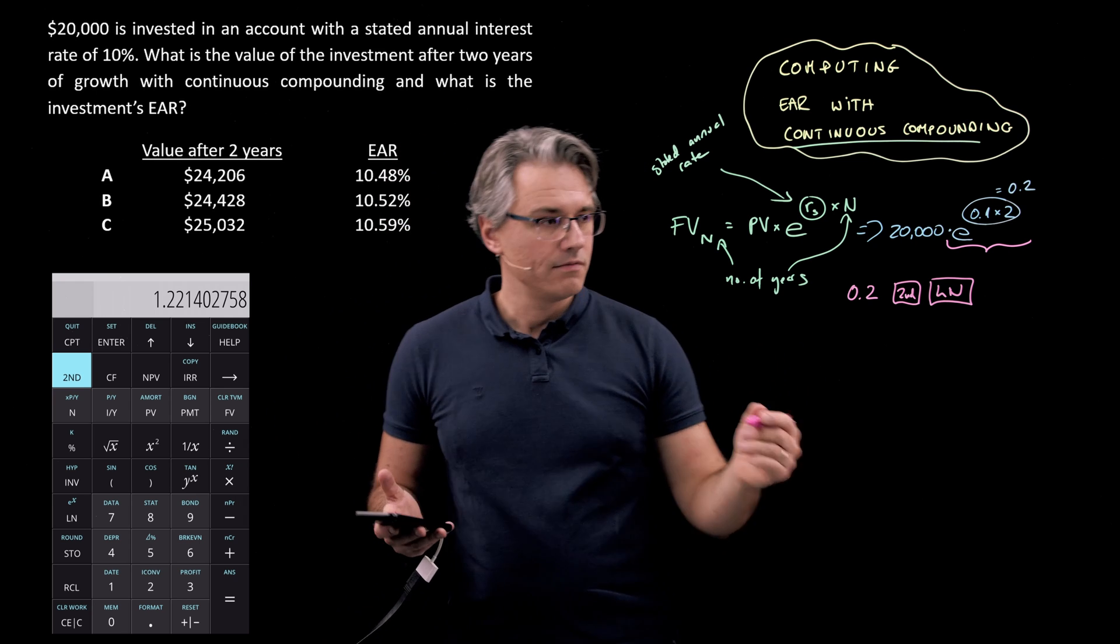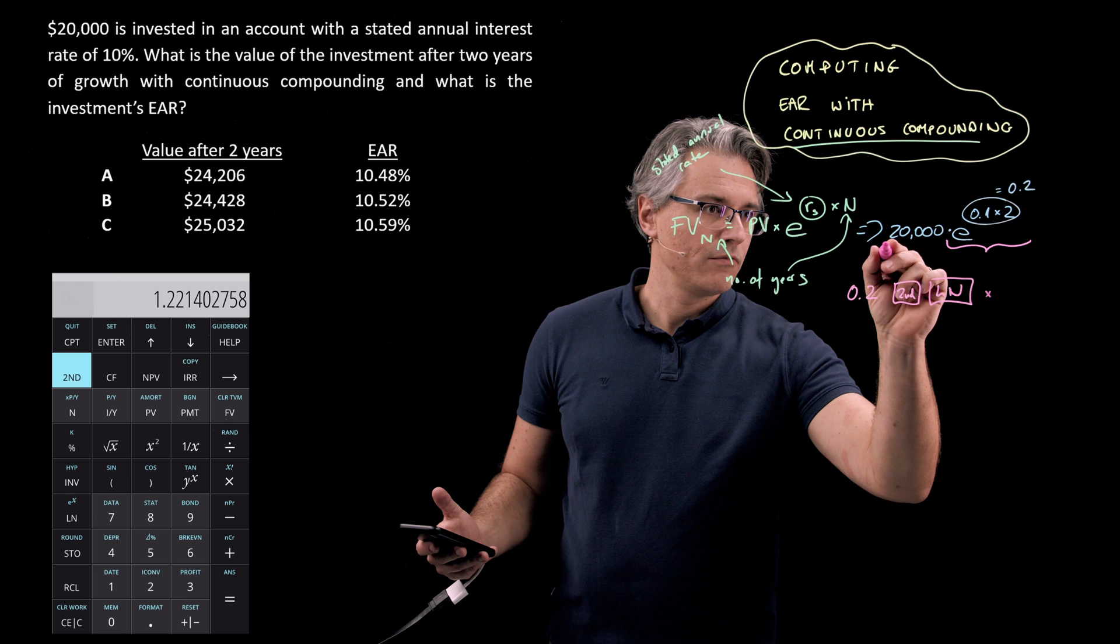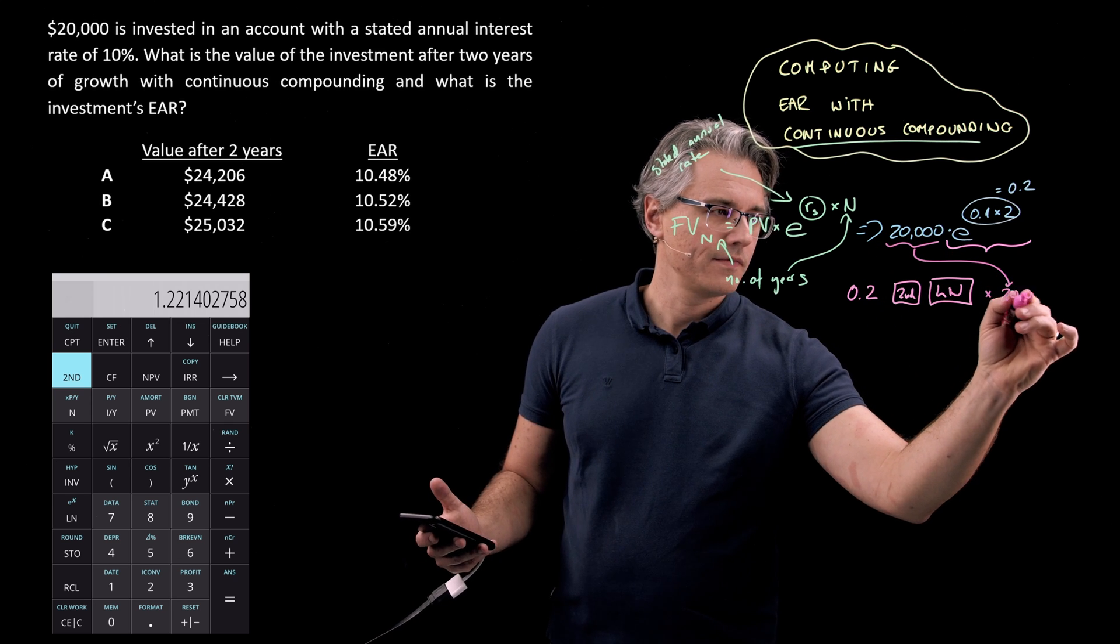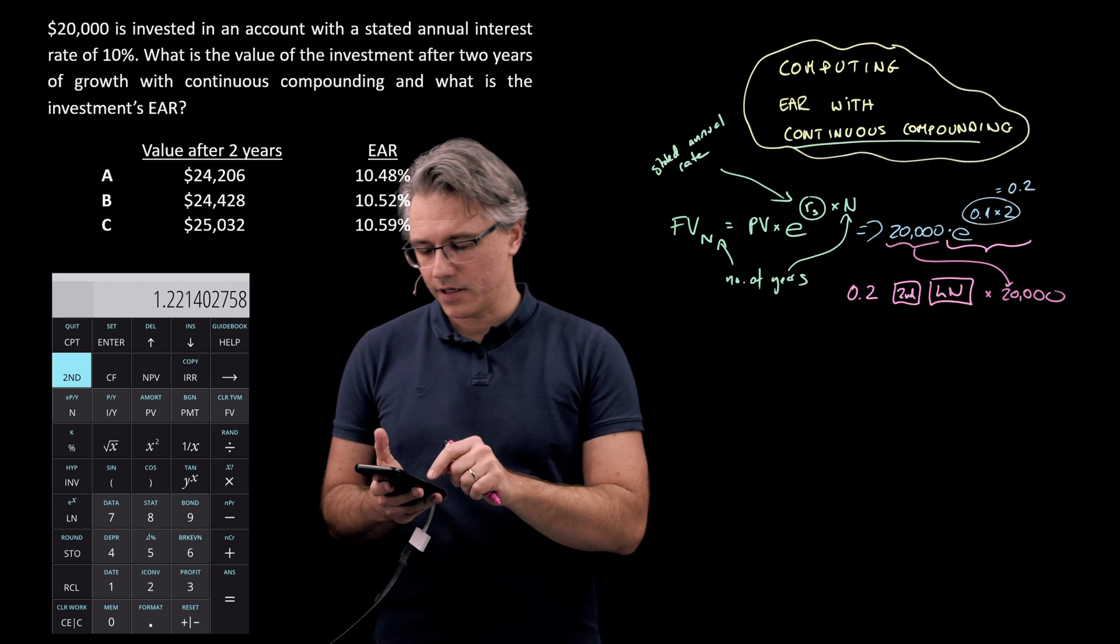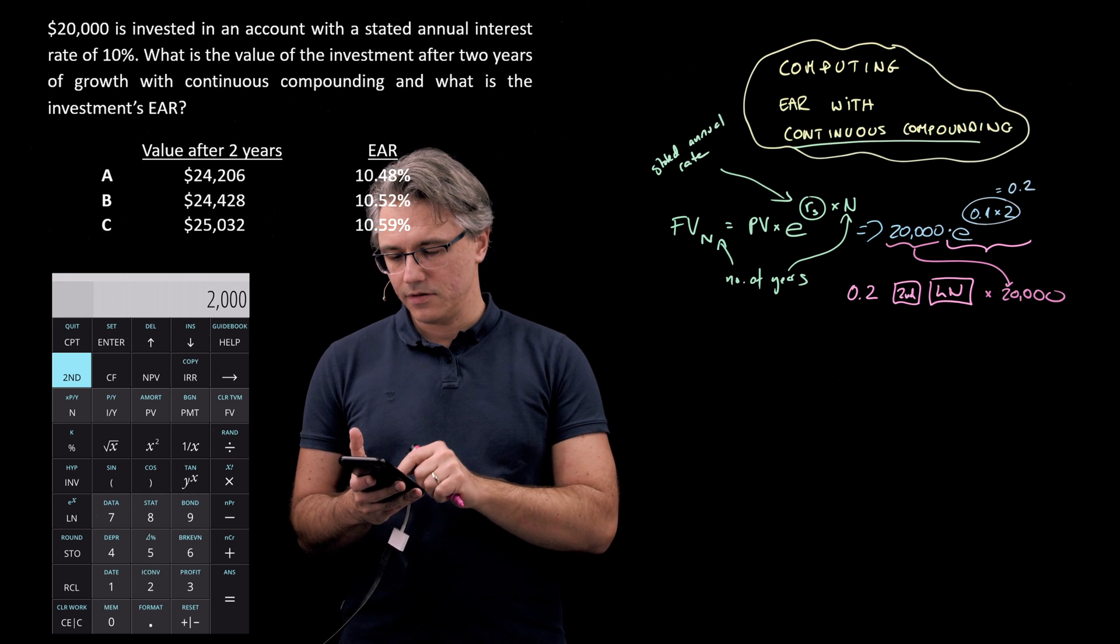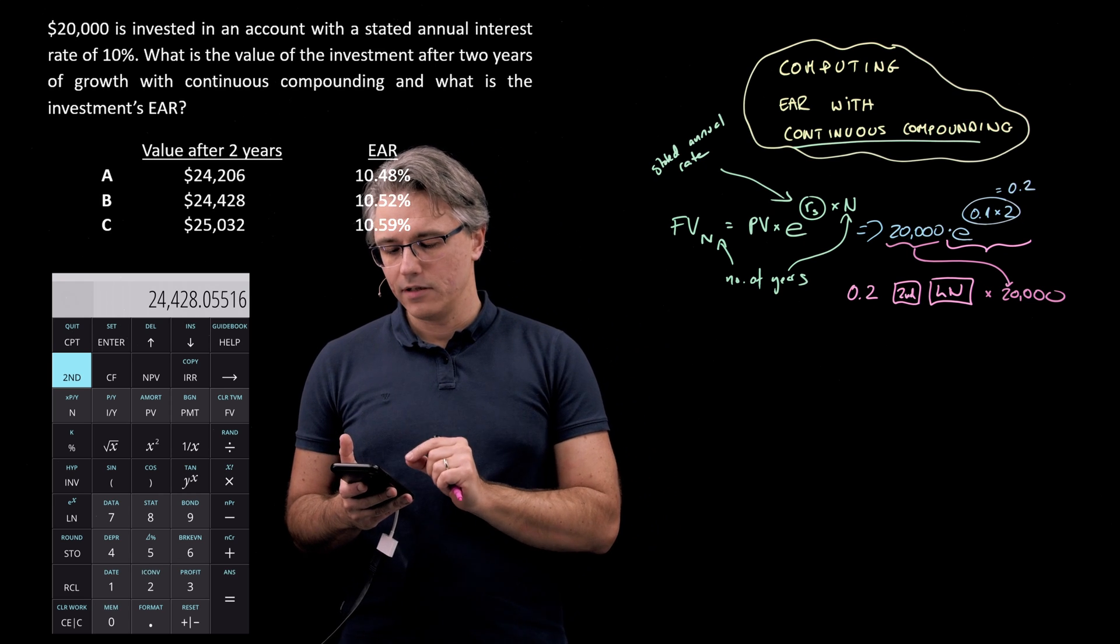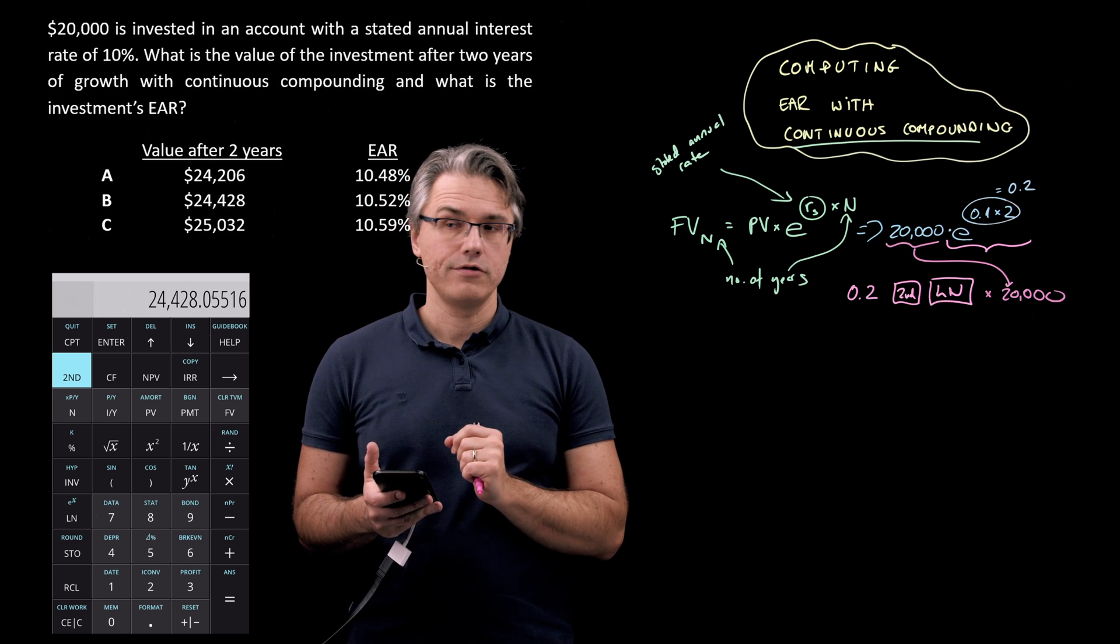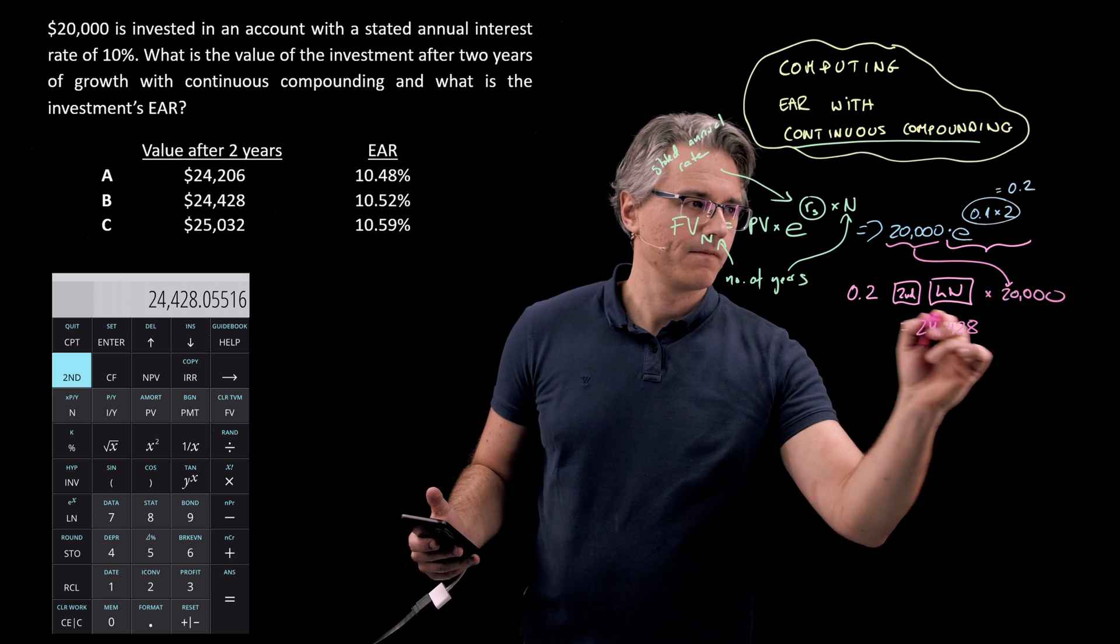So what you've effectively done right now is raised E to this power and that's the answer 1.22. And we now just need to multiply the result by whatever is sitting here. So that's our twenty thousand and this should give the correct answer. So times twenty thousand. Brilliant. Twenty-four thousand four hundred twenty-eight. Okay good.